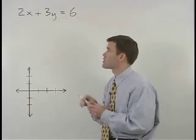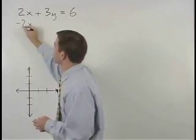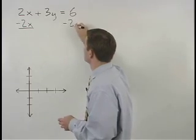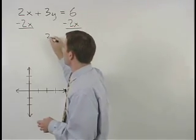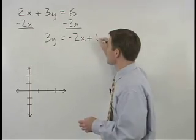And we do that by first subtracting 2x from both sides to get 3y equals negative 2x plus 6.